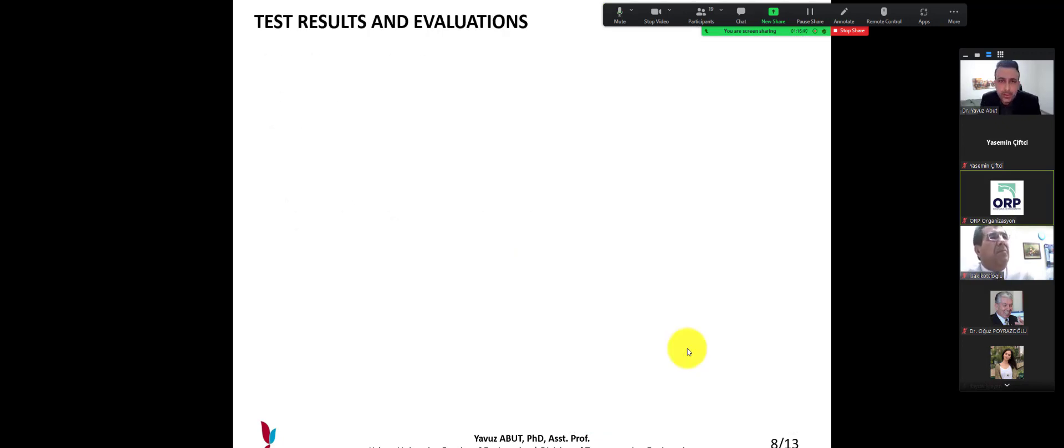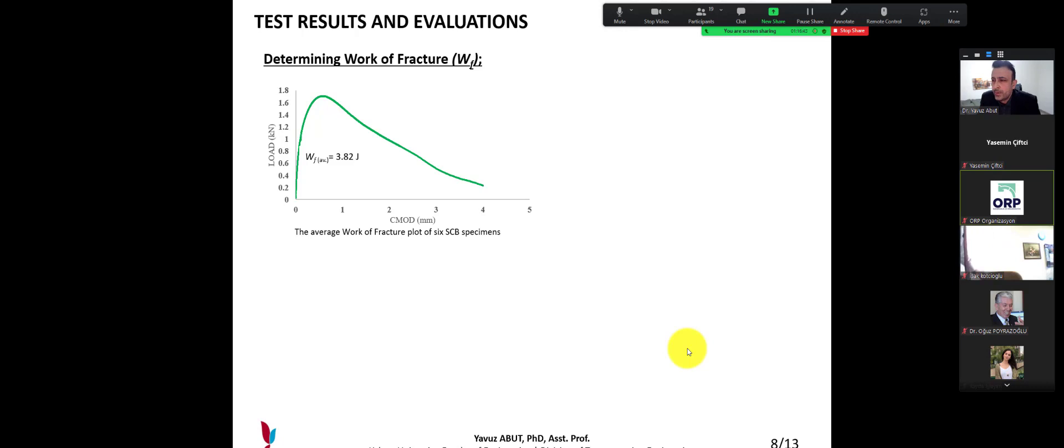Test results and evaluations. First of all, we have to evaluate work of fracture to the standard H.T.P. 105 standard. You know work of fracture is about the area under the curve of the load and displacement graph. You can see the average of fracture plot of 6 SCB specimen graph. We have average equals 3.82 J.